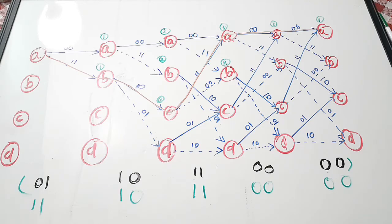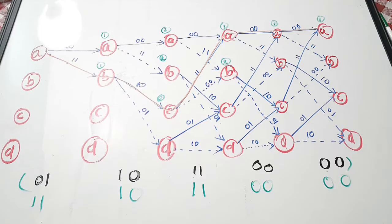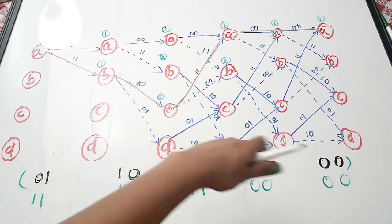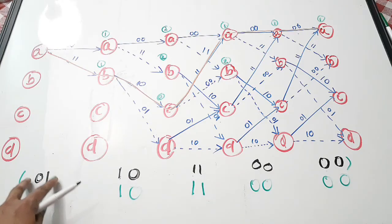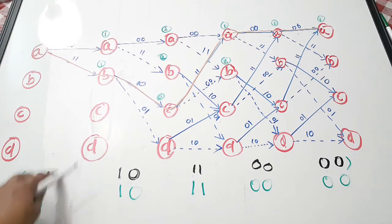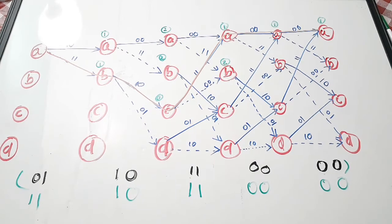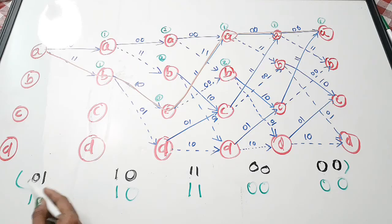According to the Viterbi algorithm, your aim is to find the path from the Trellis diagram having minimum bit difference or minimum Hamming distance. For that, you divide your code word and give it to each level, compare your received code bits with the branch outputs, and find the minimum distance path. Here there is only a 1-bit difference, and all other bits are exactly the same.